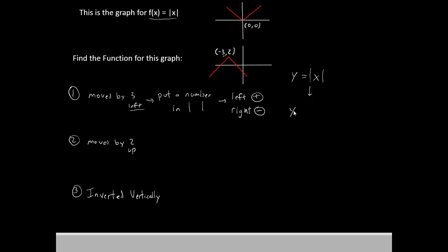So our function is now y equals absolute value of x, and we're going to add plus 3 inside the pipes.